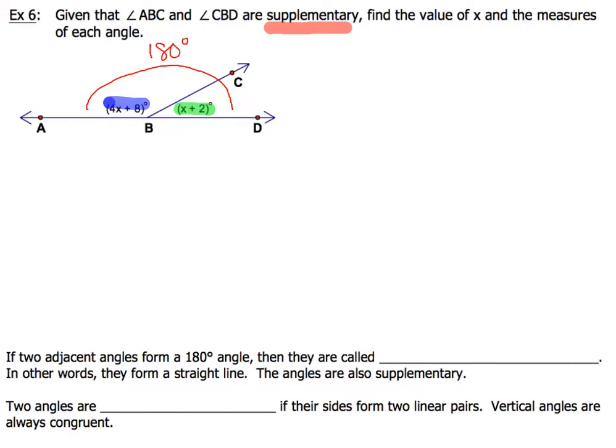We're going to continue on with Example 6. We're given that angles ABC and CBD are supplementary, and we're asked to find the value of x and the measures of each angle. First, let's take a look at our diagram. If those two angles, ABC and CBD, are supplementary, that means they're going to have a sum of 180 degrees.